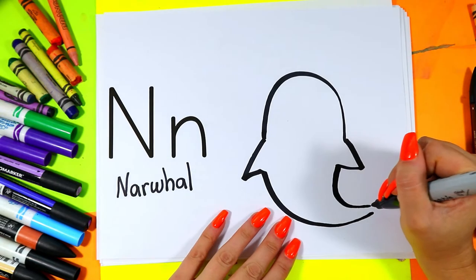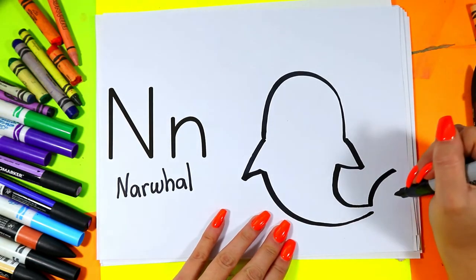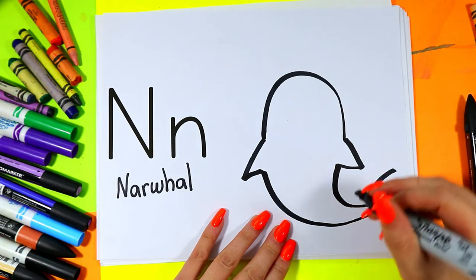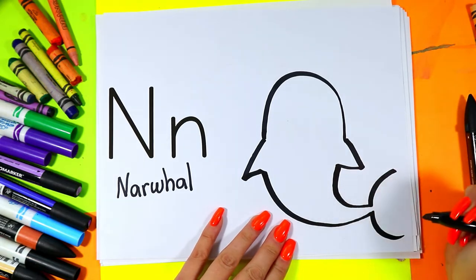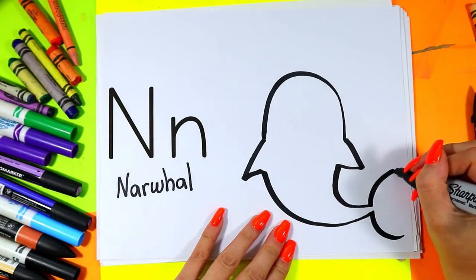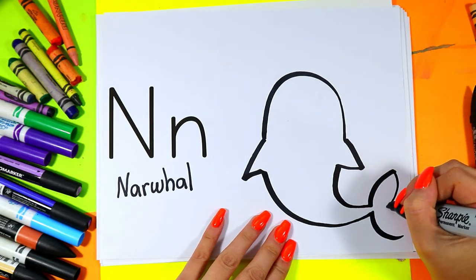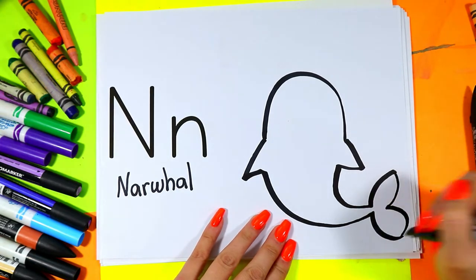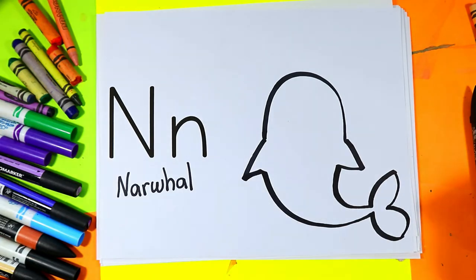Alright, here we'll add the tail fin so we'll add a curving line on one side from that line at the end and one going the other way as well. Then we're going to draw a letter M between to create the end of narwhal's tail.